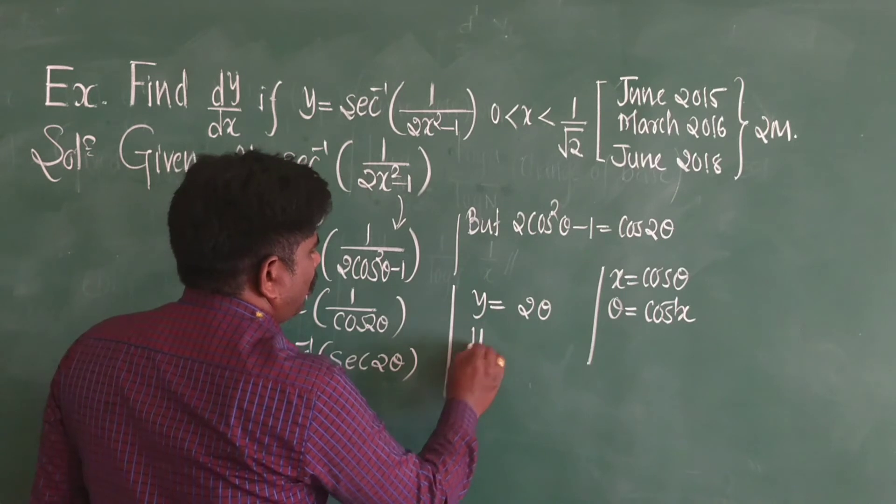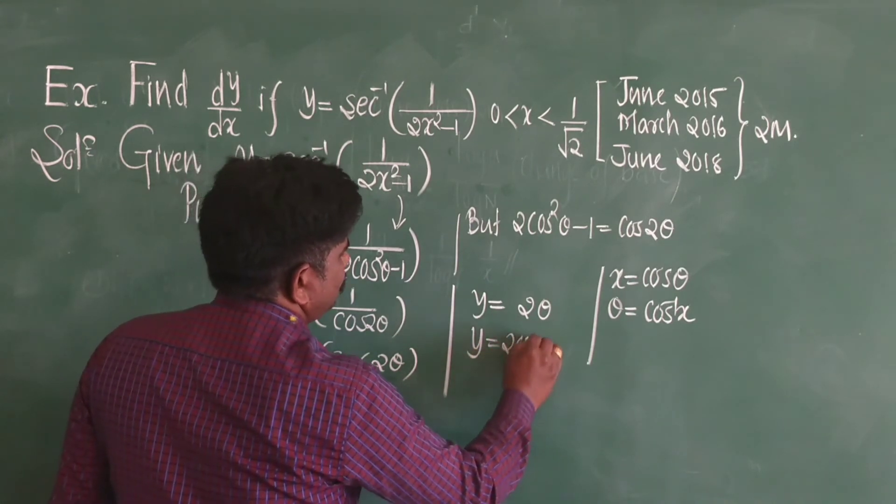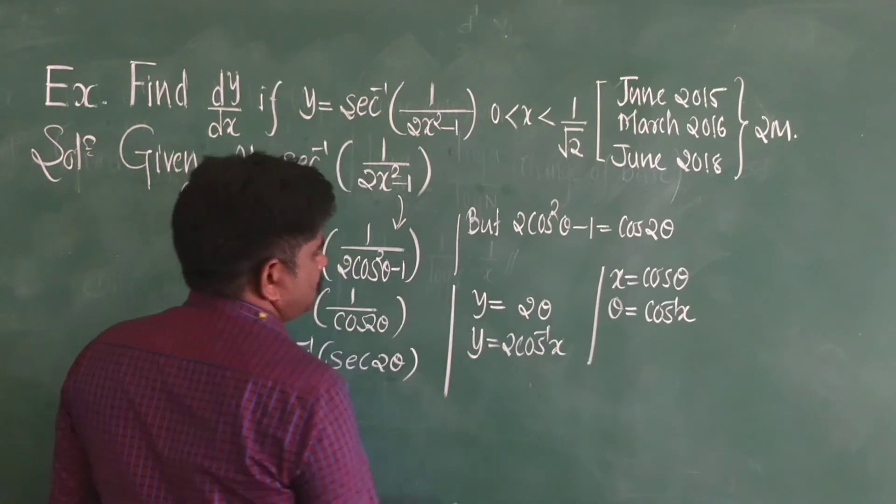In the place of theta, I will take cos inverse x. Cos inverse x. Now,